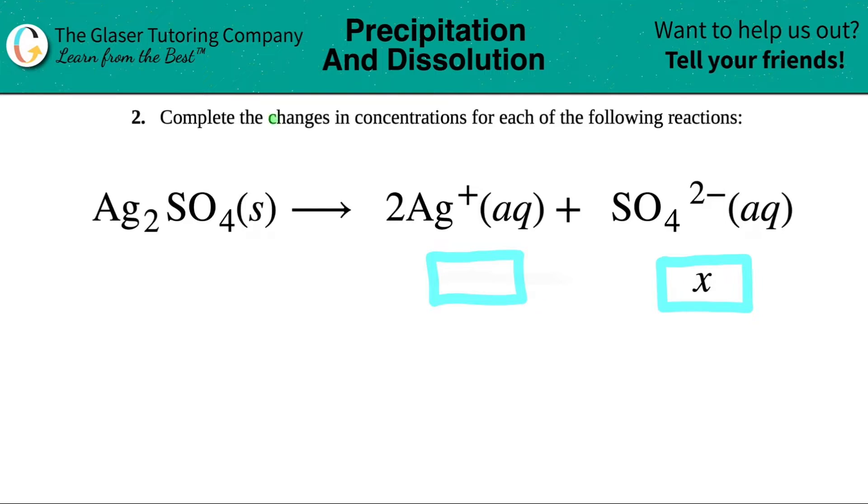Number two, complete the changes in concentrations for each of the following reactions. And then we have this reaction over here. Ag2SO4 solid will dissociate or yield into 2Ag+ aqueous plus the sulfate SO4 2- aqueous.